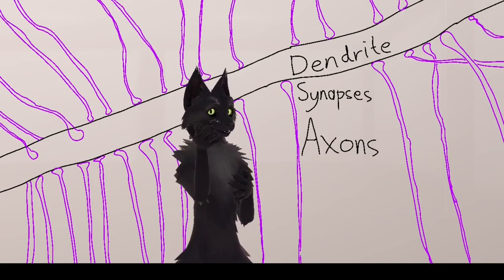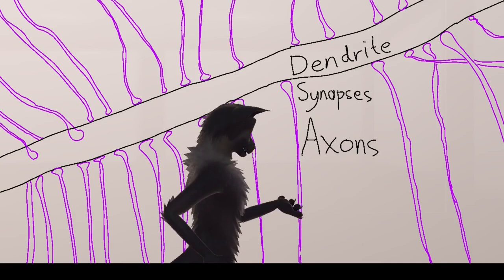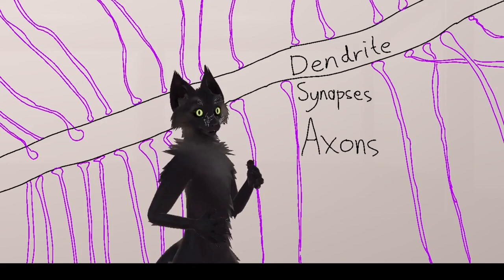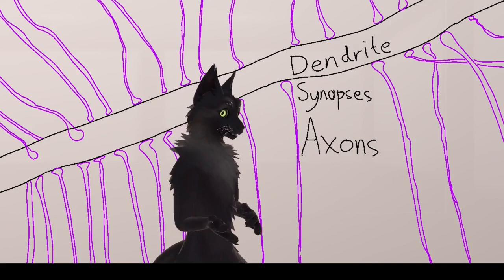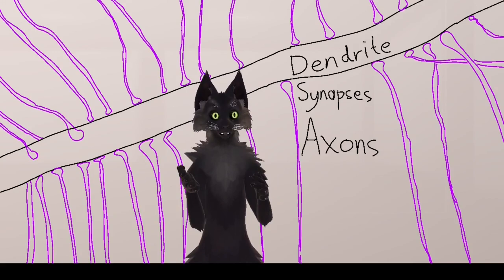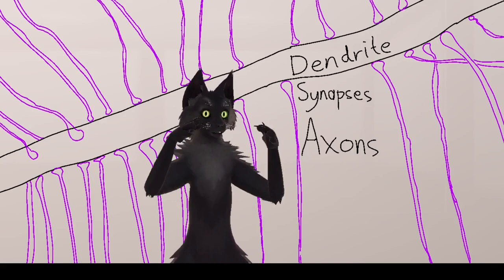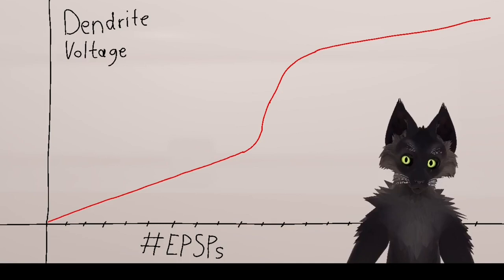Action potentials travel through the axons, shown in purple here, to the synapses, and then at the synapses, they cause something called an excitatory post-synaptic potential on the dendrite, or EPSP for short. An EPSP is a brief pulse of electric current, and that raises the voltage of the dendrite by a little bit. When several EPSPs happen at the same time on the same dendrite, their electric currents add up, and together they have a proportionally larger effect on the voltage of the dendrite.